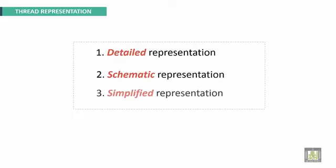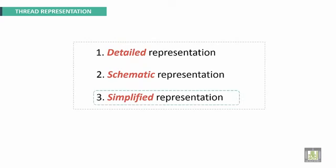To make a representation for a thread, we have three types of representations. The first one is called detailed representation, the second one is called schematic representation, and the third one is called simplified representation. This simplified representation is what we will use during this course.